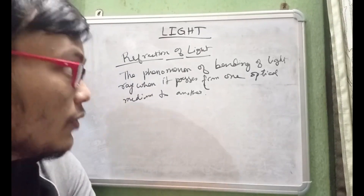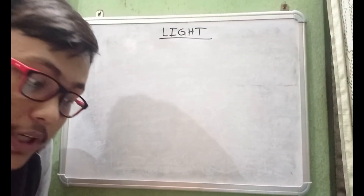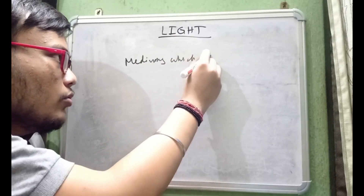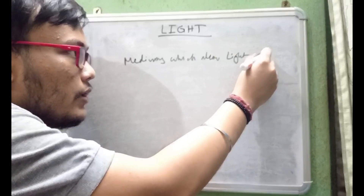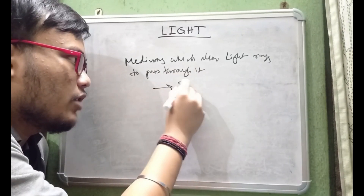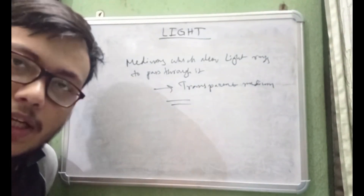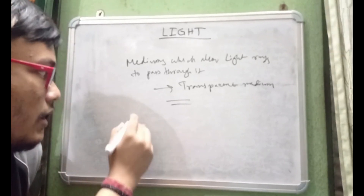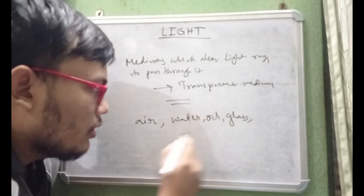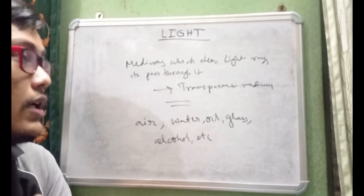Before going further into refraction, we need to learn about mediums. Any medium which allows light rays to pass through it is called a transparent medium. As a whole they are called optical mediums. Examples of transparent mediums are air, water, oil, glass, alcohol — anything which allows light rays to pass through it.